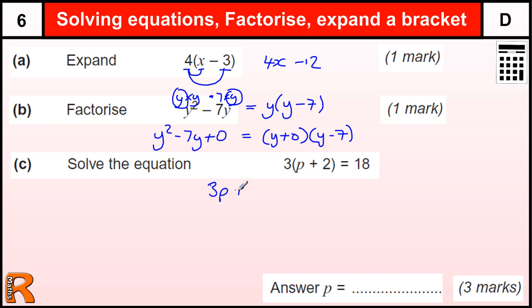So 3 lots of p and 3 lots of 2 is 6. So one mark for multiplying out the brackets. And then a little bit of manipulation—standard stuff—where we take away the 6 to get 12, and then we divide by the 3 to get 4. So p equals 4.